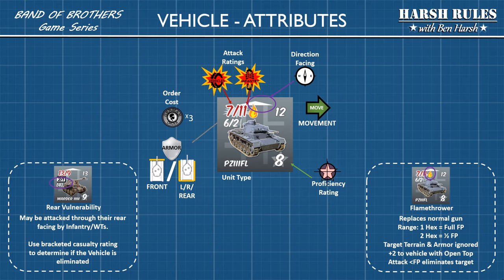Some vehicles have their guns replaced with flamethrowers. Flamethrowers only have a range of two hexes, and they only get full firepower in the first hex. In the second hex, they have half firepower rounded up. With flamethrowers, target terrain and armor is ignored except for the concealed marker. There's a plus two to vehicles with an open top. And if the attack roll is less than the firepower, it eliminates the target.